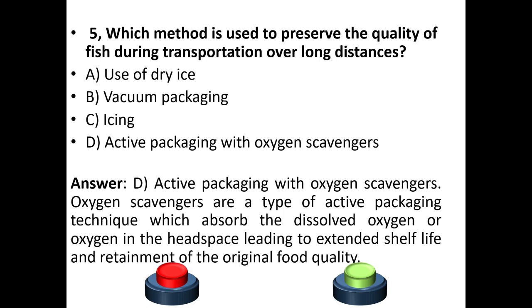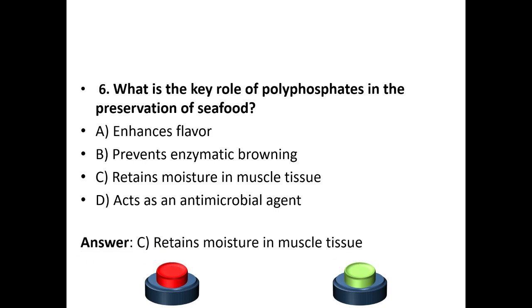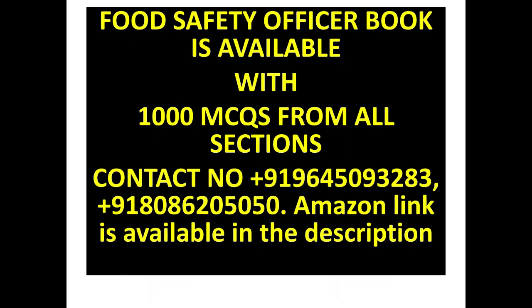Sixth question: What is the key role of polyphosphates in the preservation of seafood? A) enhances flavor, B) prevents enzymatic browning, C) retains moisture in muscle tissue, D) acts as an antimicrobial agent. The most appropriate answer is option C — retains moisture in muscle tissue.